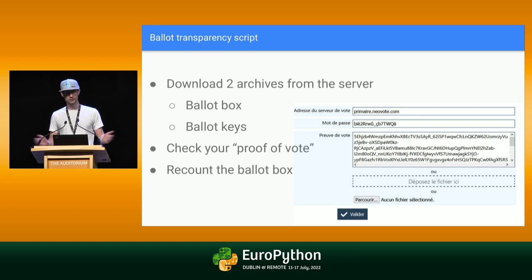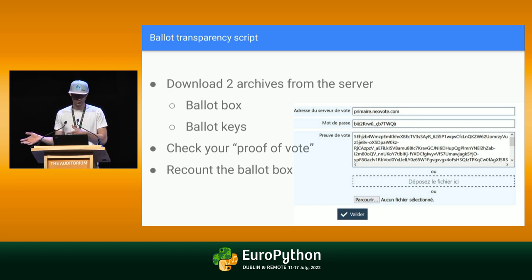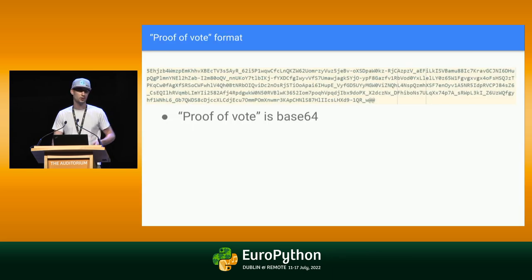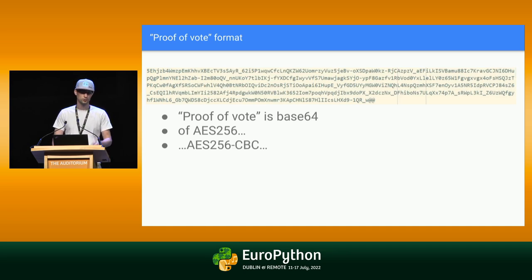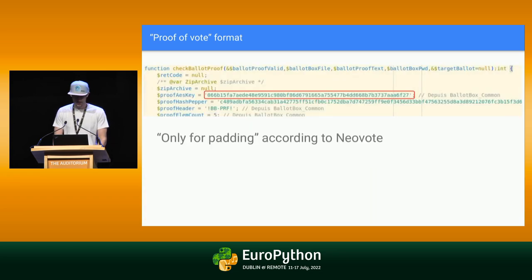What does this script do? It goes on the website, downloads two archives, decrypts them with the password, then checks the proof of vote and counts the ballot. The proof of vote is a base64 of something encrypted with AES — symmetric encryption with a hardcoded key. The key is inside the script. I asked Neovote about that and they said it's fine, there is no security issue, because it's not for security — it's for padding.